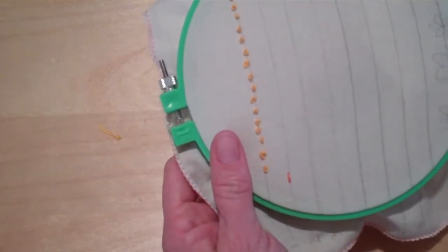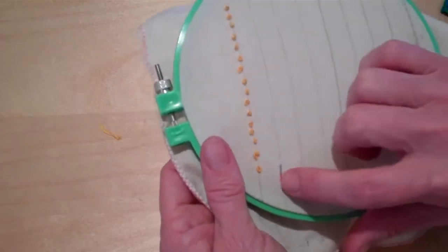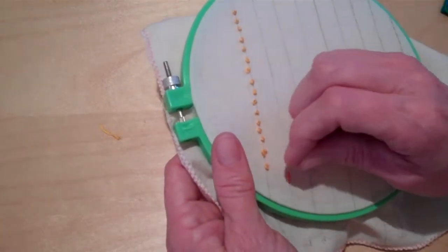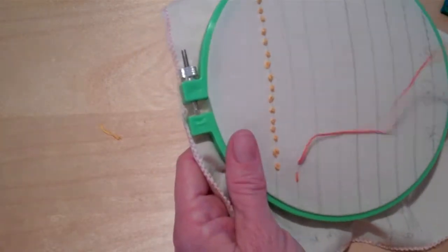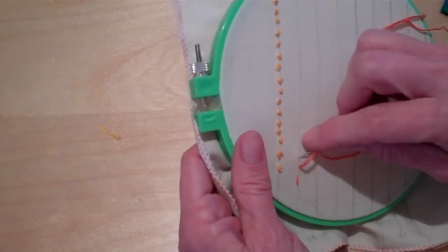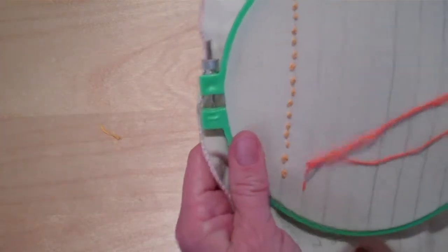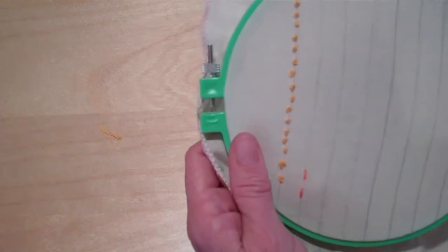The straight stitch looks best if you make it equal. So however much you come up, you go down. So I think that looks like it's about a quarter inch. So you go up and down like this.